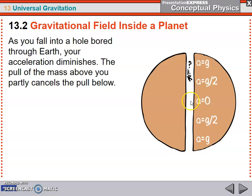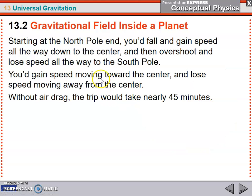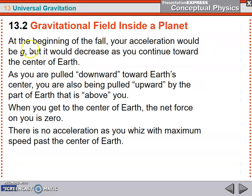As you go down, your acceleration, which is normally 9.8, we abbreviate it with g, goes down. Then it will be half of g, and then in the very center of the Earth, your acceleration will be zero. Starting at the North Pole end, you'd fall and gain speed all the way down to the center and then overshoot and lose speed all the way to the South Pole. You'd gain speed moving towards the center and lose speed moving away from the center. Without air drag, the trip would take 42 minutes.